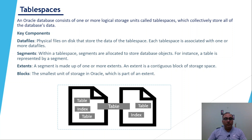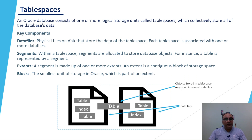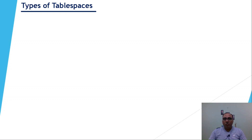A tablespace normally looks like this: it can have two data files, and a single table can span or utilize both data files. Within one data file there may be several different database objects like indexes, tables, views, procedures, and functions. Data files contain the actual data, so to summarize: a tablespace is a collection of different data files.